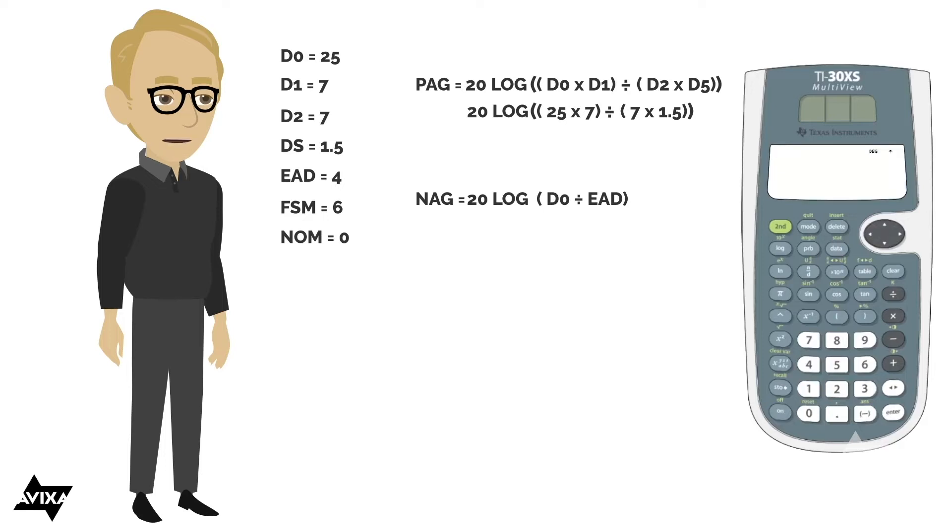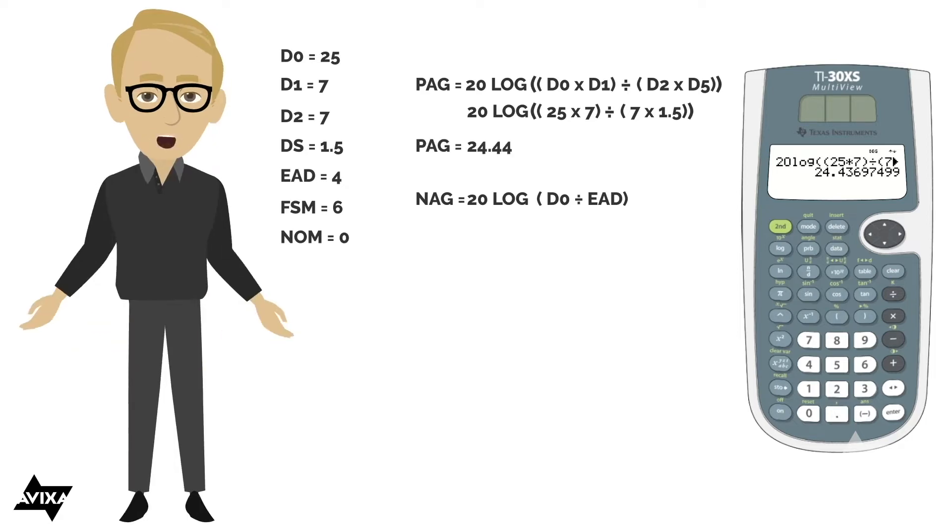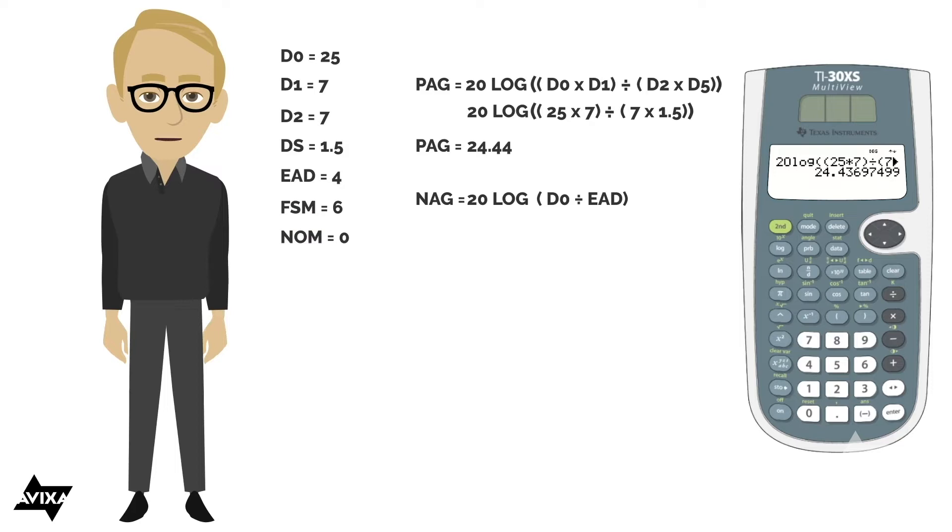Let's plug this into our calculator, and let's see what we get for a PAG. So 20 times the log, open up a second parens, 25 times 7, close that parens, divided by, open up a paren again, 7 times 1.5, and then two parentheses to close. The enter button, and we end up with a PAG, and it's going to be okay to round this, 24.44.